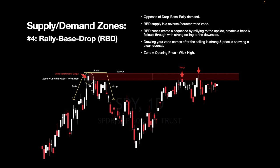It doesn't always have to be the first test that's best — that's just a rule of thumb. Test three and test four here still worked pretty well. New liquidity gets opened up here and results in more selling to the downside. Price provides an entry after it returns to the zone — you're not entering after it reverses up here, you're letting it do its thing and waiting for it to get all the way back. You can go short, take profit on your calls, whatever you need to do. The zone is there for you to make an educated decision on where price is going to go next.